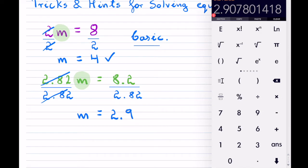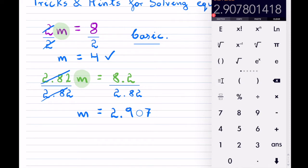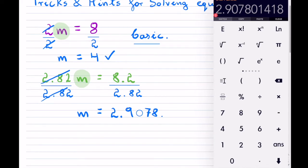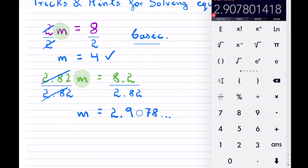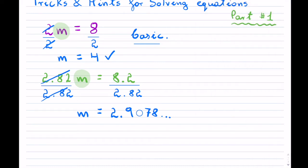If you're solving this for some problem, the decimal answer continues, so you may be asked to round. Don't arbitrarily round — ask your teacher what they want it rounded to, or check if it states in the question. The key idea is that both examples follow exactly the same strategy: you have a number, you want to get rid of it, so you divide both sides by it.